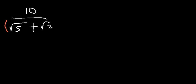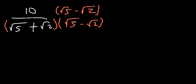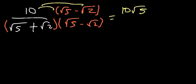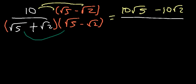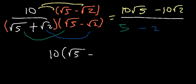Try: 10 divided by root 5 plus root 2. Multiply top and bottom by the conjugate root 5 minus root 2. On top: 10 times root 5 minus 10 times root 2, giving 10 root 5 minus 10 root 2. On the bottom: root 5 times root 5 is 5, the two middle terms cancel, and root 2 times root 2 is 2. So the denominator is 5 minus 2, which is 3. The answer is 10 root 5 minus 10 root 2 over 3.